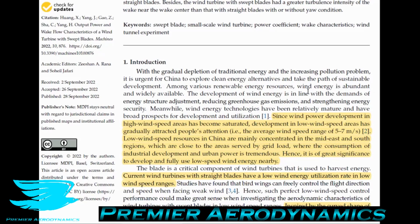Since wind power development in high-speed wind areas has become saturated, development in low wind speed areas has gradually attracted attention — specifically the average wind speed range from 5 to 7 meters per second. Low wind speed resources in China are mainly concentrated in the mid-east and south regions, which are close to grid load areas where industrial development and urban power consumption is tremendous. Hence, it is of great significance to develop and fully use low-speed wind energy nearby.